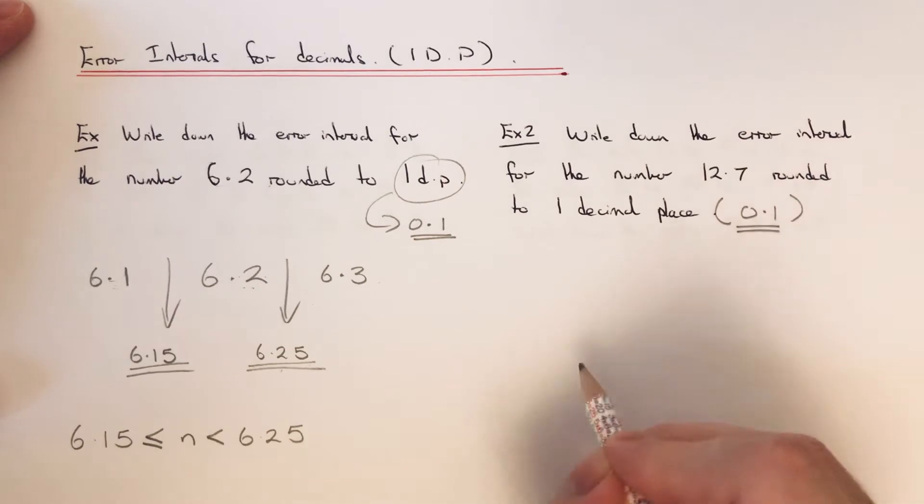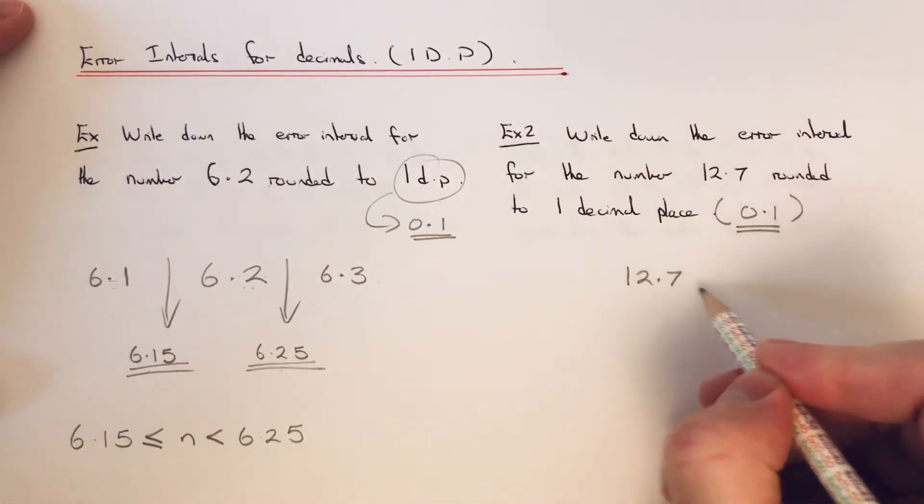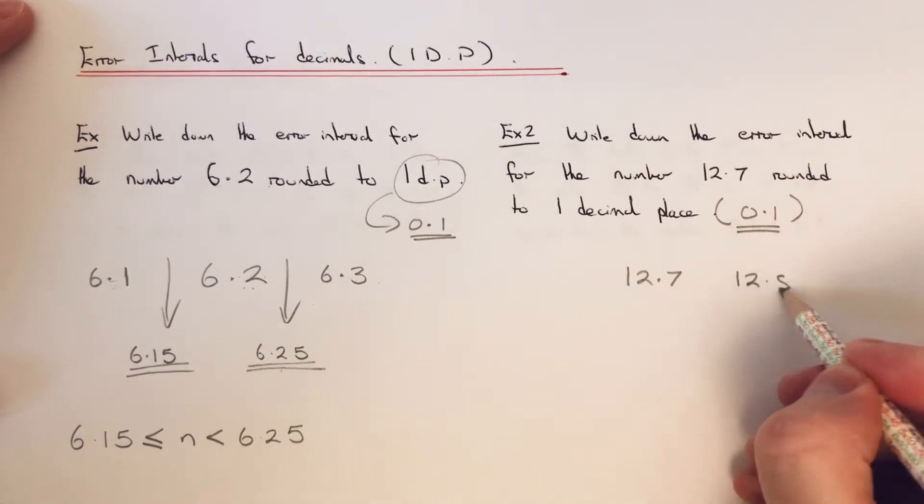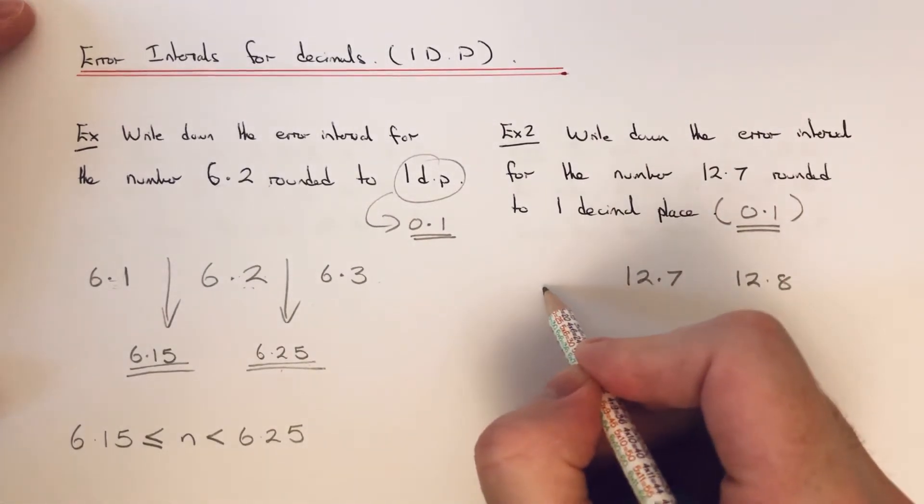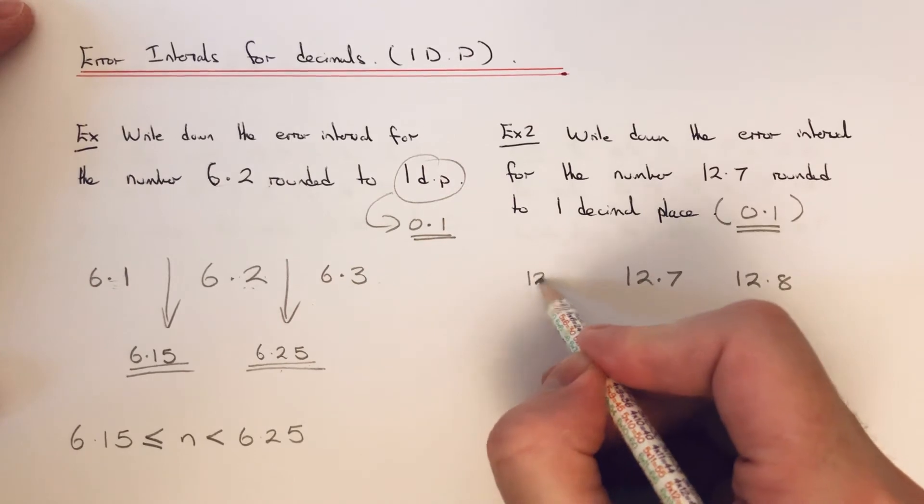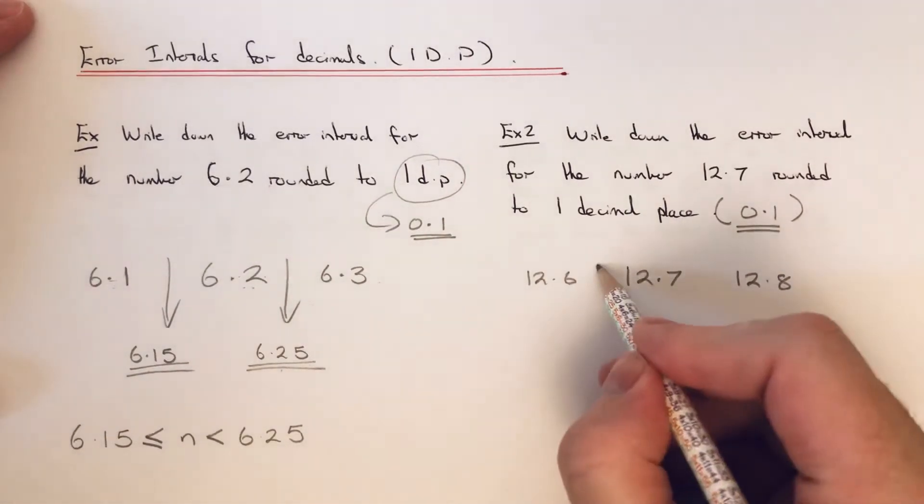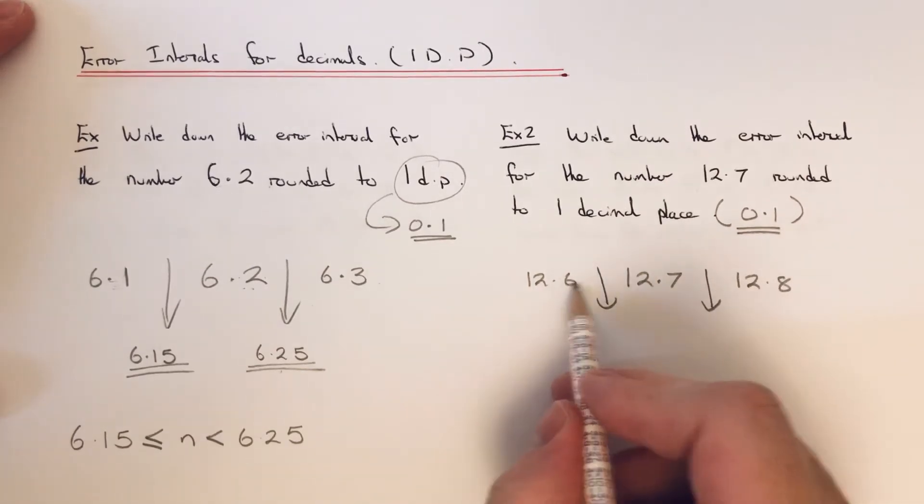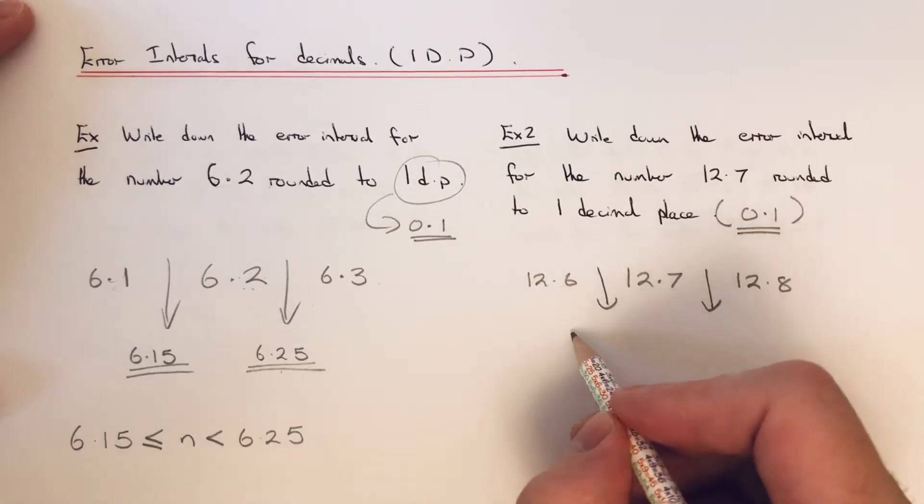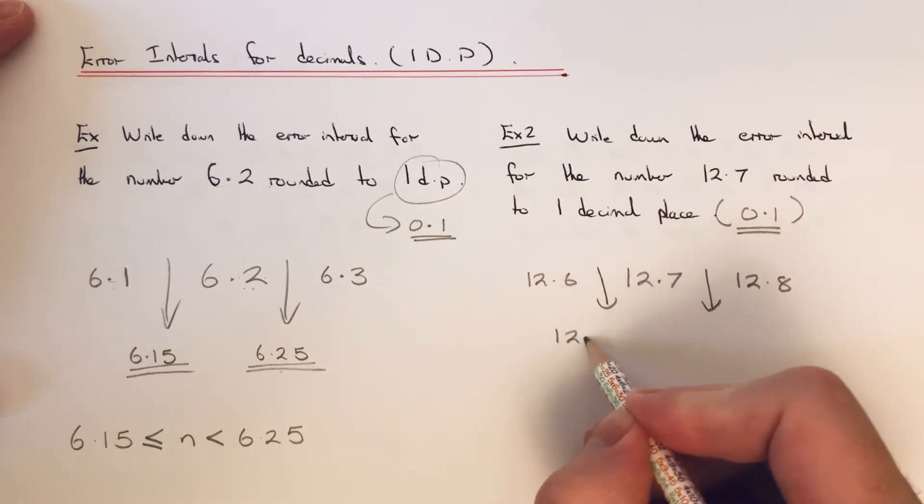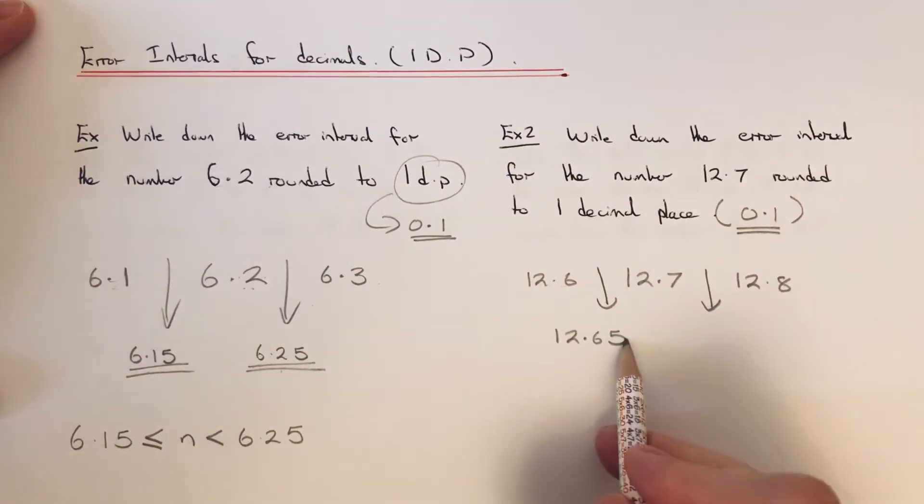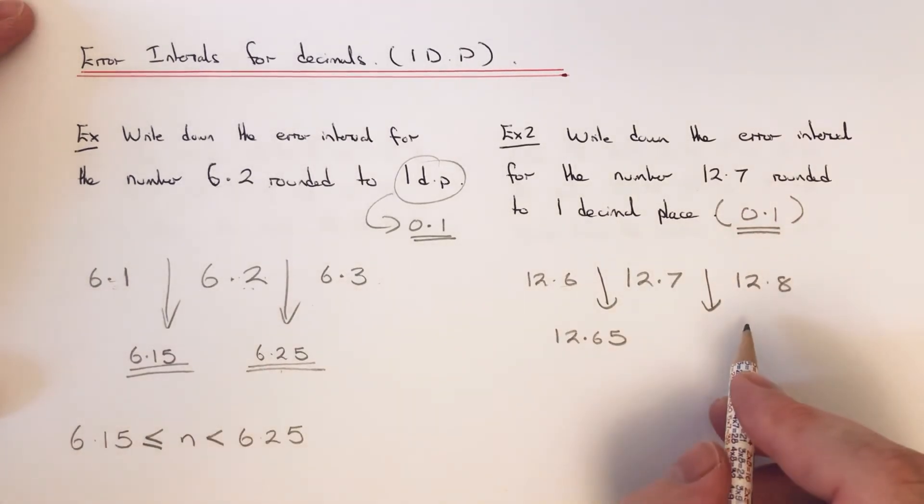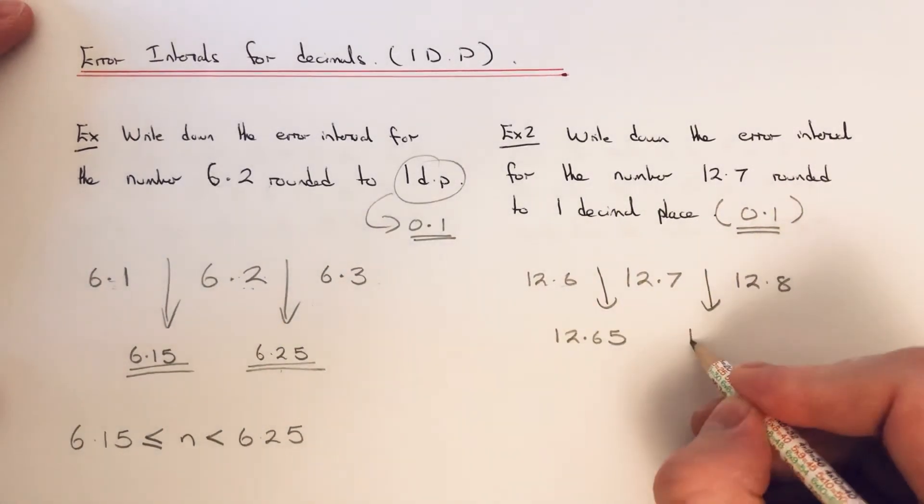So if we copy 12.7 down, add 0.1 to this number gives us 12.8, take 0.1 off that gives us 12.6. So we just need to find our halfway numbers. So halfway between 12.6 and 12.7 will be 12.65—nice, I've just put a 5 on the end again. And then halfway between 12.7 and 12.8 is 12.75.